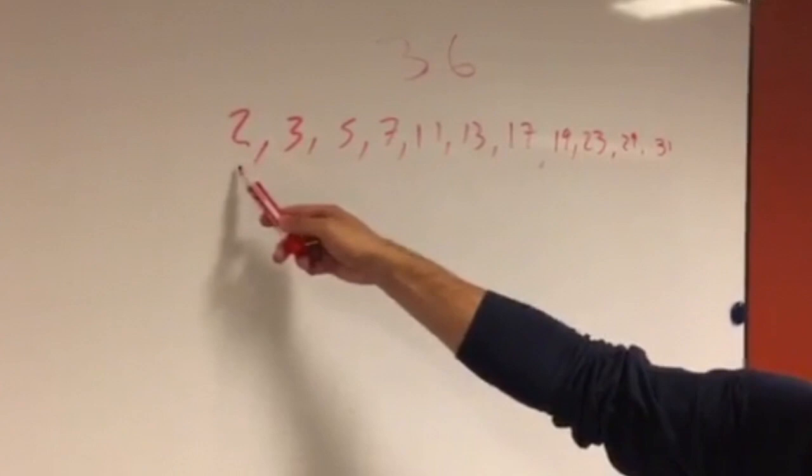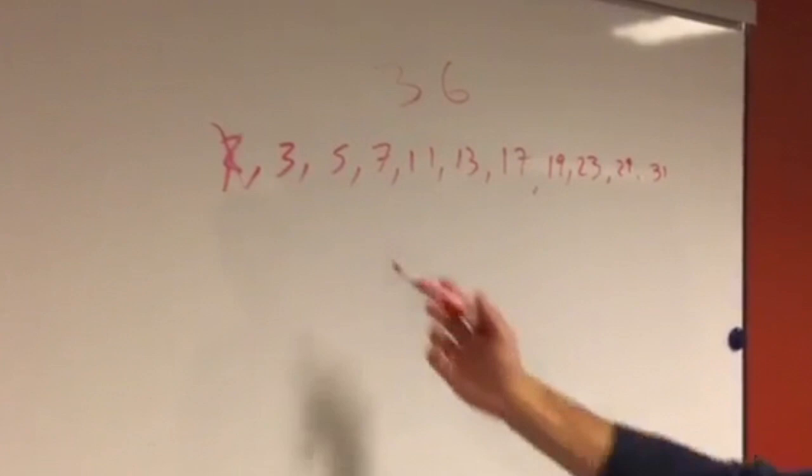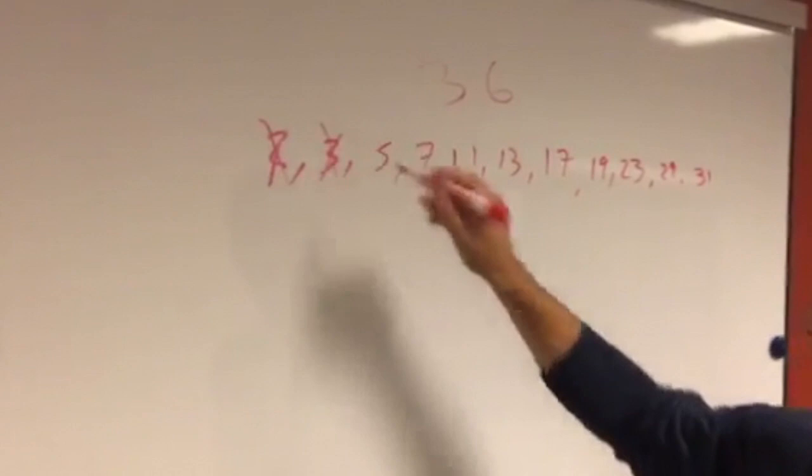If we look closely, in order to get thirty-six with two, which is the first prime number, we'd have to add thirty-four, which is not a prime number, so two doesn't work. Three, we would need thirty-three, and thirty-three is not a prime number, so that doesn't work.